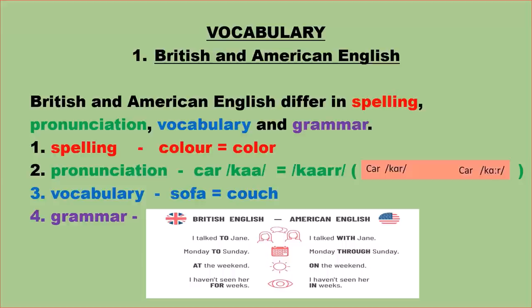You can see the examples. This is the example for spelling — how the spelling differs: C-O-L-O-U-R and C-O-L-O-R. The first is British and the second is American. For pronunciation, the R in the ending position is not pronounced in British English — they say 'car' — whereas in American English the R is pronounced with a rolling effect: 'car.'